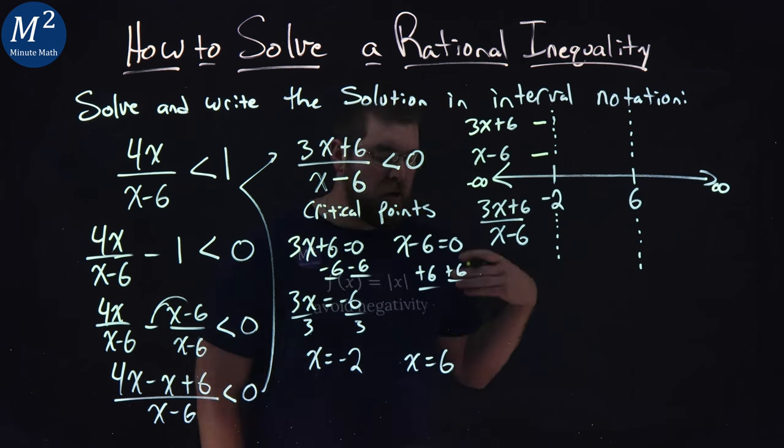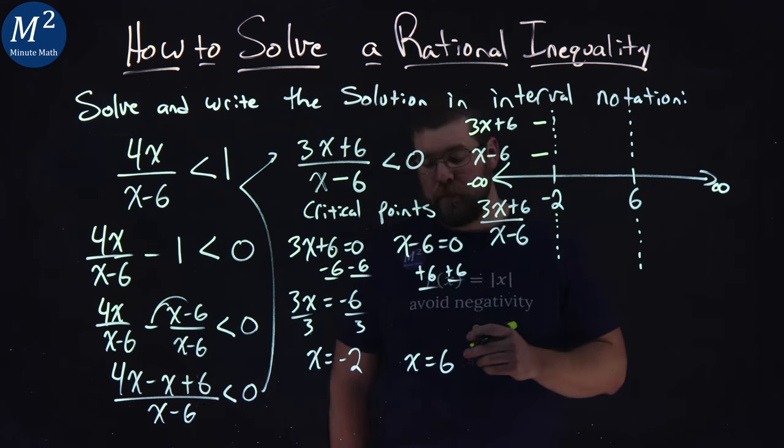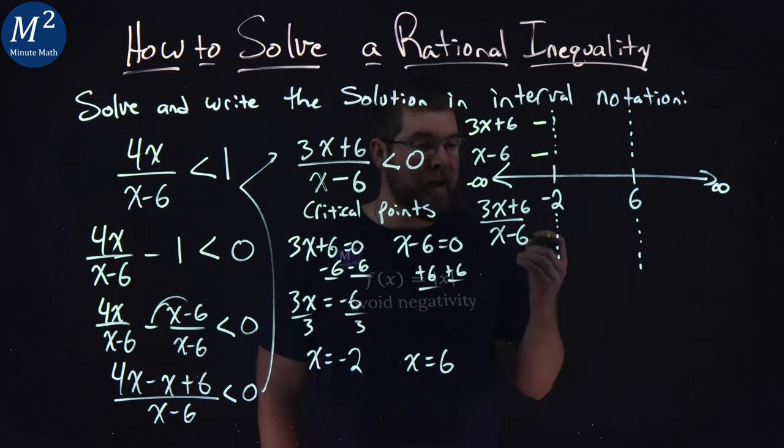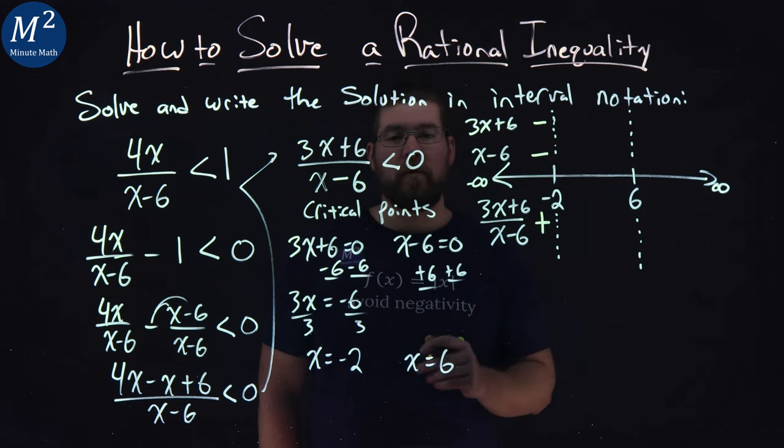Numerator and denominator are going to be negative numbers always within negative infinity to negative 2. A negative divided by a negative is a positive. So from negative infinity to negative 2, we have a positive number.